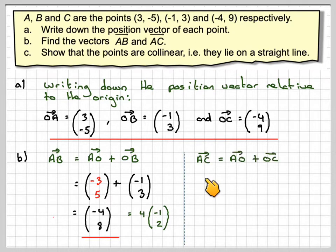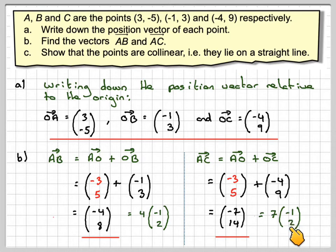And then for AC, that's the same as going AO + OC. We're going against this vector here, so that will become (-3, 5). So you change the signs. Plus (-4, 9). And then -3 plus -4 gives me -7, and 5 plus 9 gives me 14. Now you could write that as 7(-1, 2).